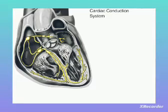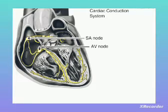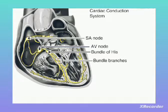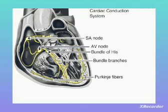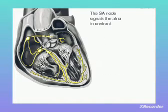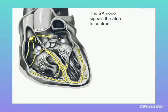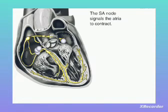The main parts of the system are the SA node, AV node, bundle of His, bundle branches, and Purkinje fibers. Let's follow a signal through the contraction process. The SA node starts the sequence by causing the atrial muscles to contract — that's why doctors sometimes call it the anatomical pacemaker.